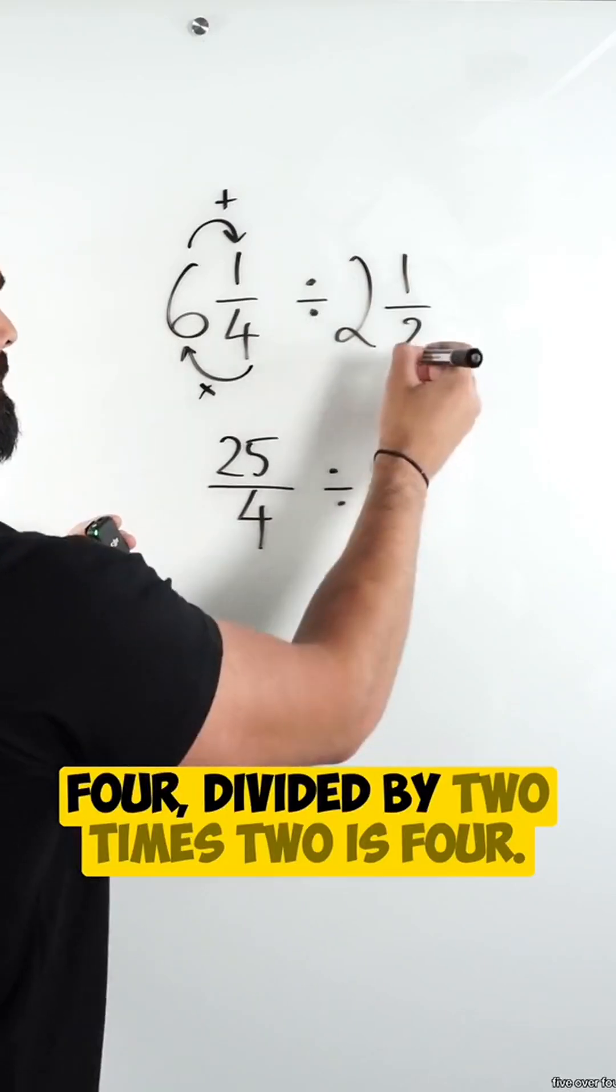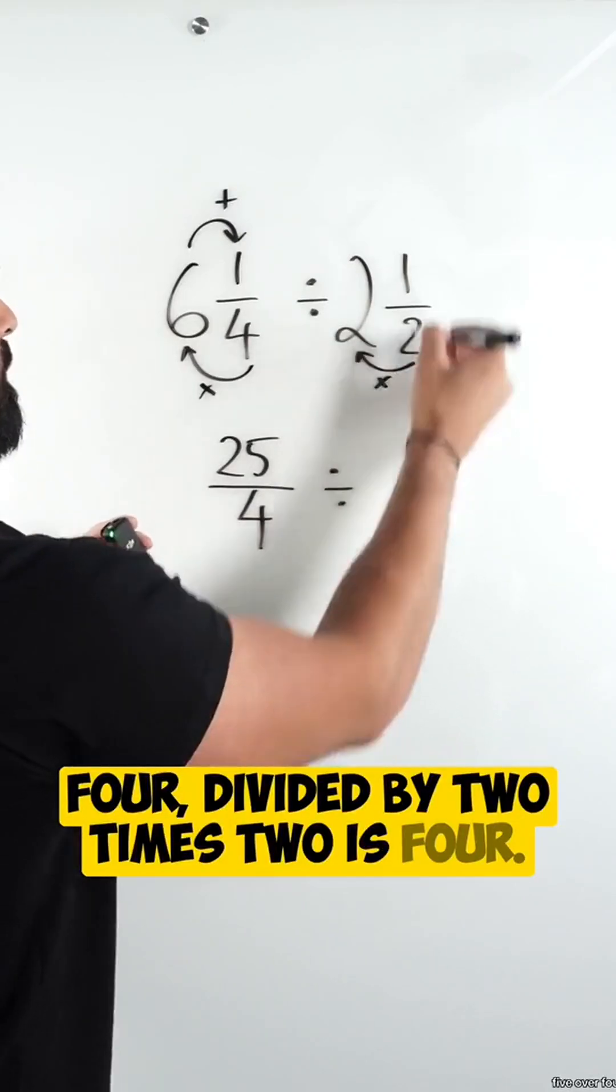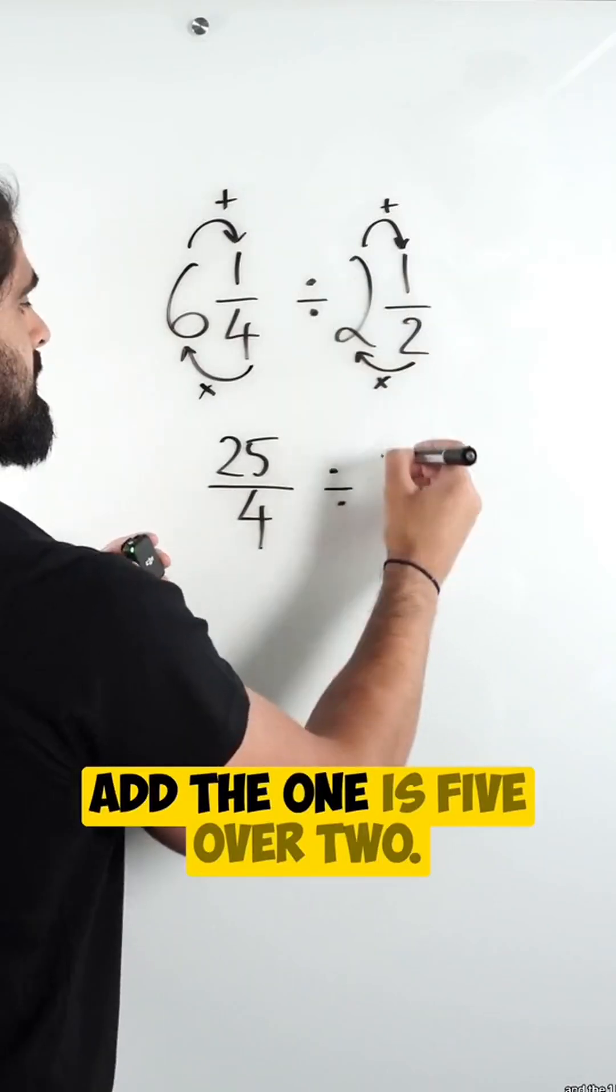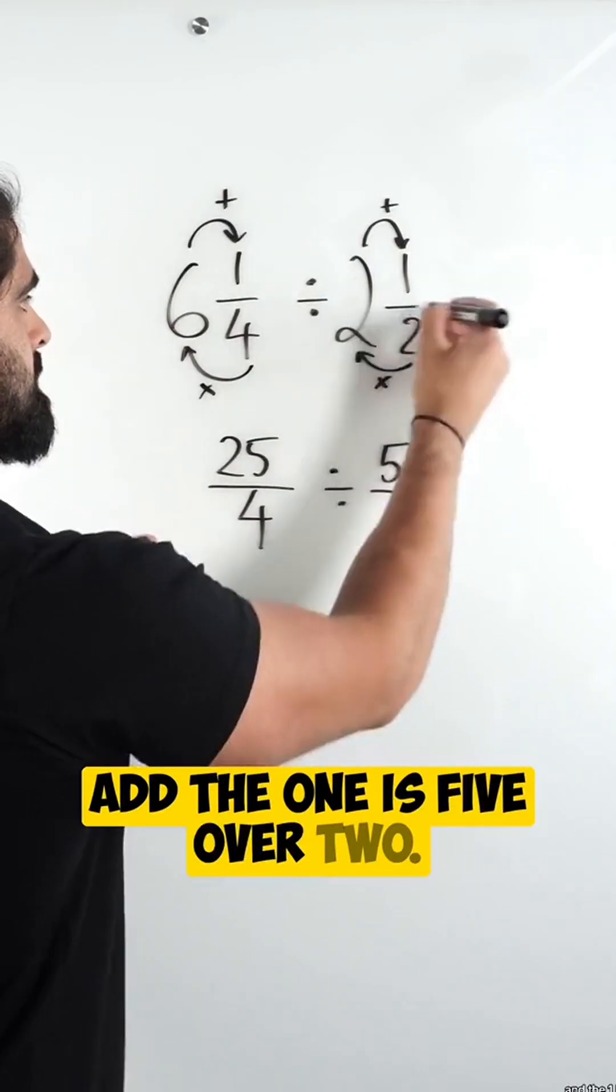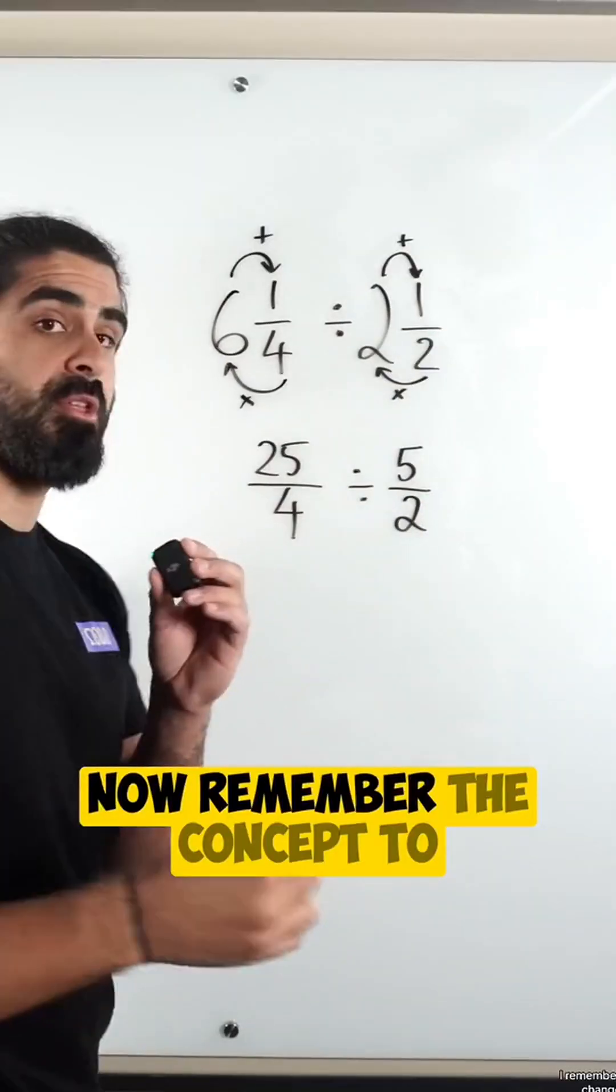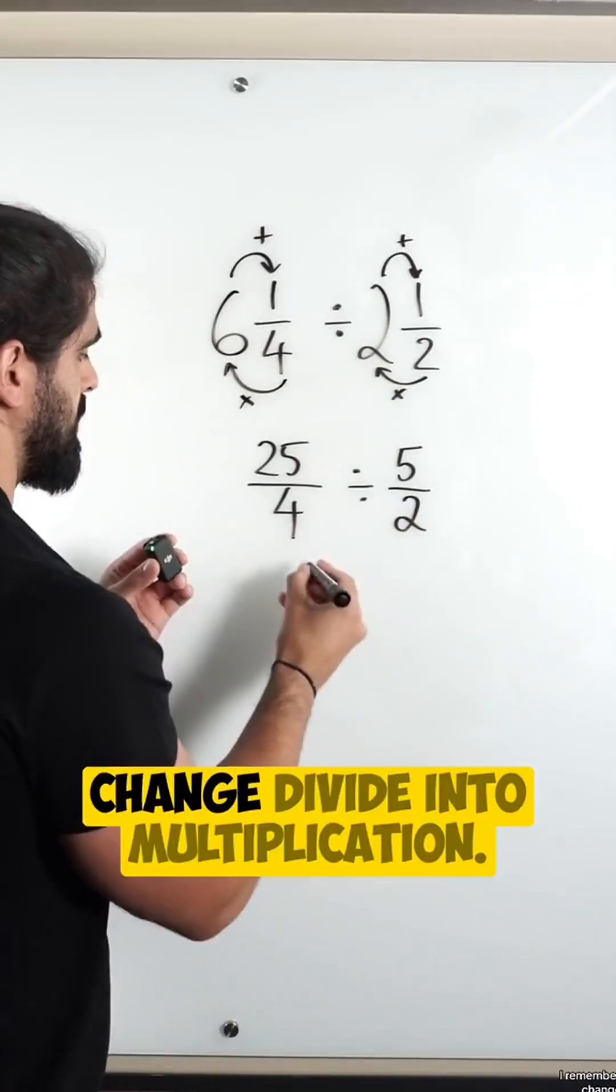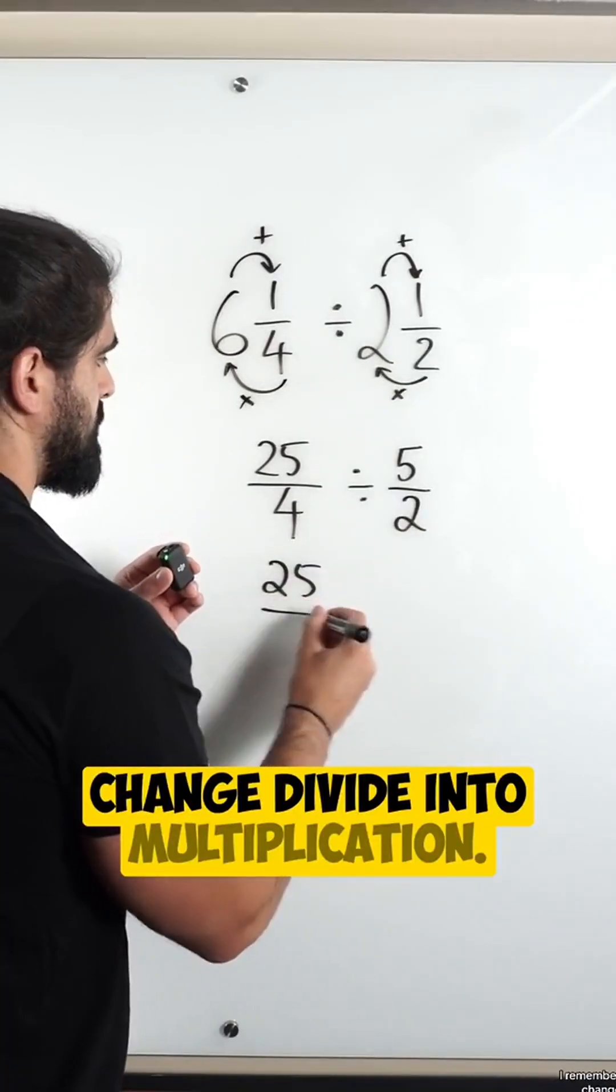Divided by two times two is four, add the one is five over two. Now remember the concept to change divide into multiplication.